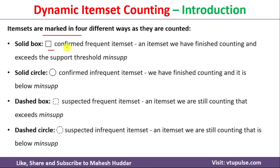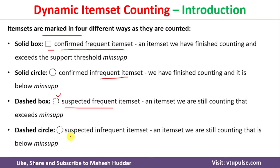In dynamic item set counting, we use different symbols to represent item sets. If we know a particular item set is frequent, we use a solid box. If we know it is infrequent, we use a solid circle. If an item set may become frequent in future — a suspected frequent item set — we use a dashed box. If an item set will become infrequent in future — a suspected infrequent item set — we use a dashed circle.